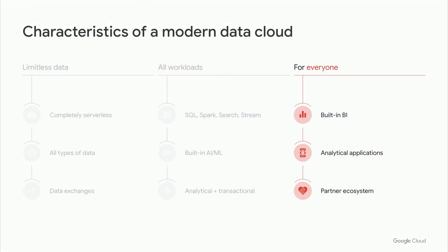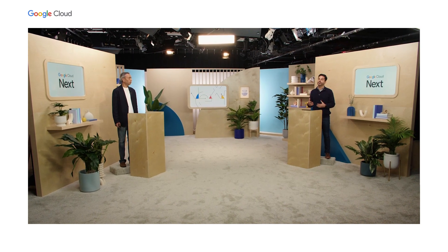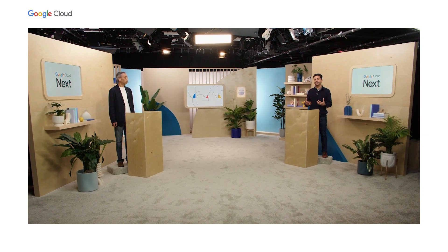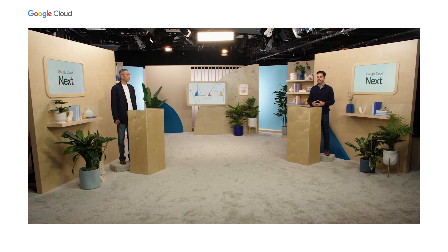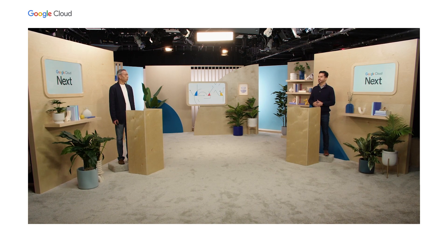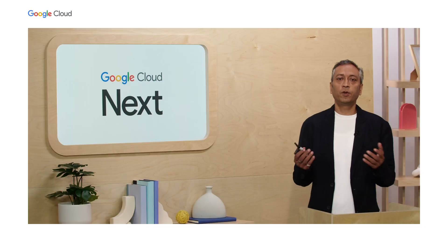We've talked about data and workloads of all types, but ultimately we're doing all of this to drive efficiency, enable better decision-making, and provide better user experiences. To see how Google's Data Cloud can reach across an organization, we're going to hand it over to Vikas and hear about their implementation of a data mesh architecture and how they were able to transform their organization.